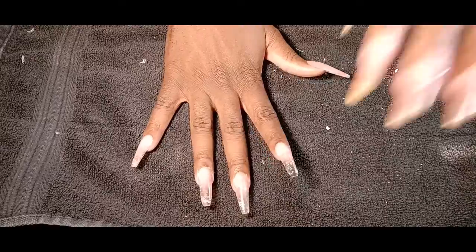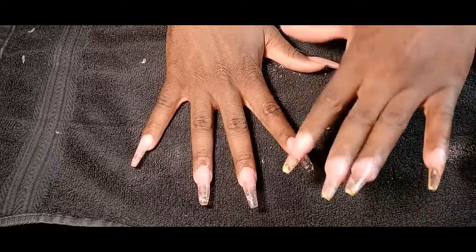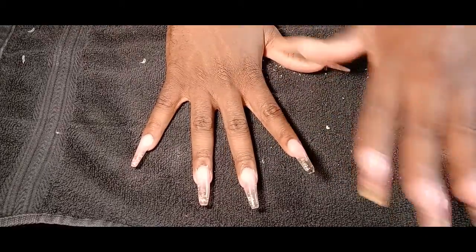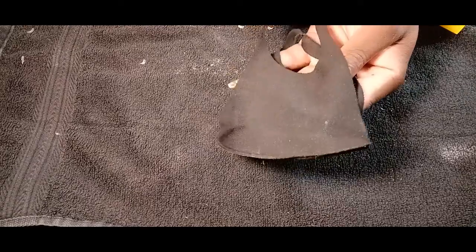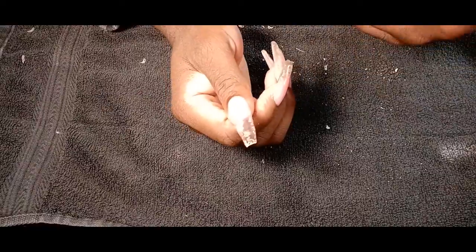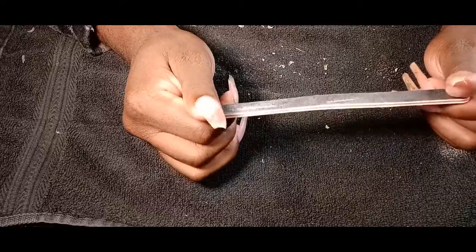Alright. So I went ahead and I cured these. With this type of gel, it's just going to have an inhibition layer. So the top layer is going to be very sticky, but don't worry about that. Now what we're going to do is, first things first, when you're filing the nails, whether you're doing an e-file or not, always wear a mask. Gel powder, gel is a lot more finer when you file it. This is a 180-100 grit. I'm going to be using the 180 side. So we're just going to start giving my shape together.